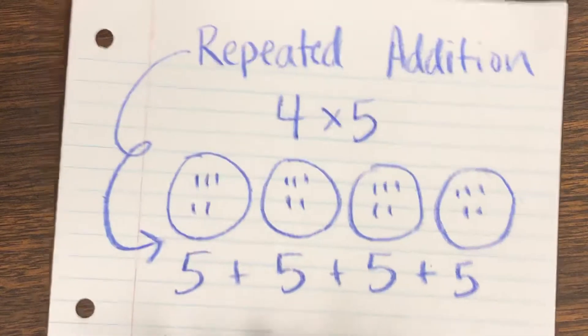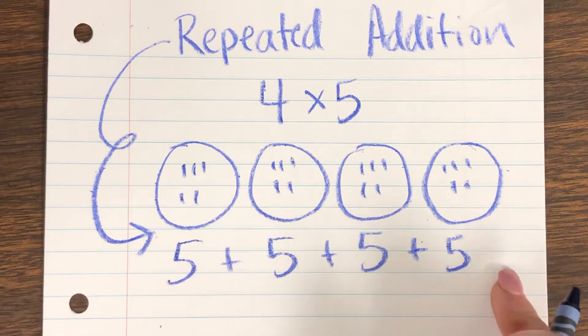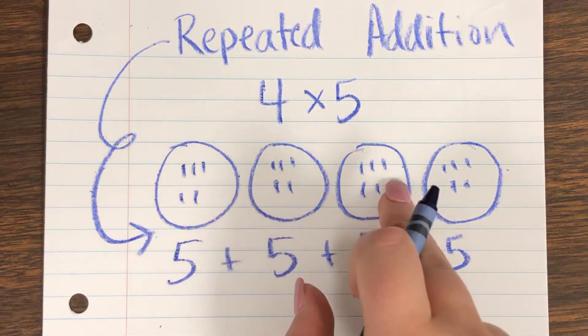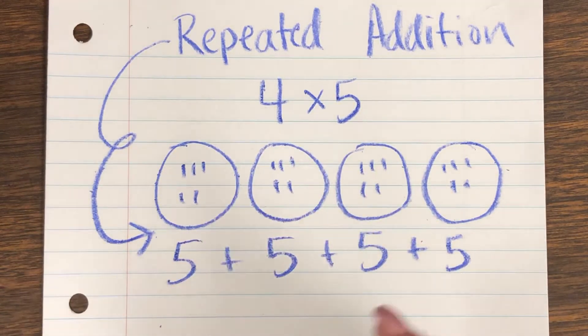So I know that the repeated addition is five, four times. It's not four five times — it's five four times. So it's backwards from what you might expect. That's why I have you draw the groups.